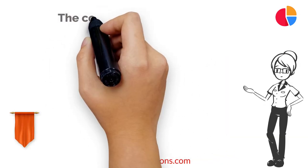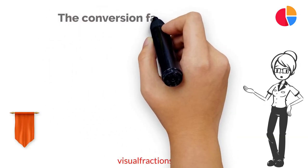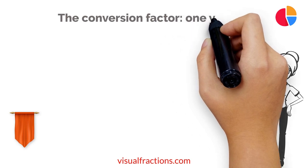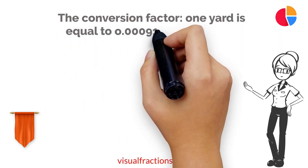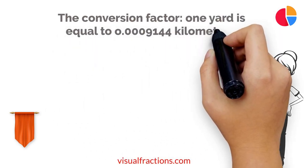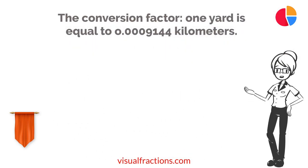First, let's recall the conversion factor. 1 yard is approximately equal to 0.0009144 kilometers.